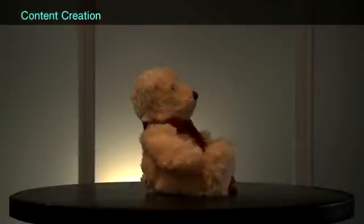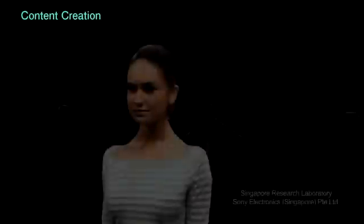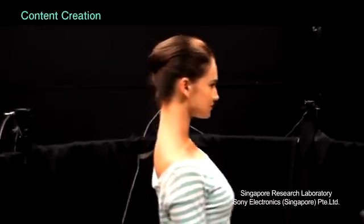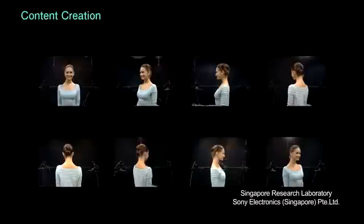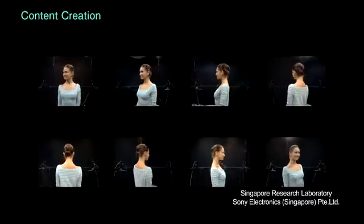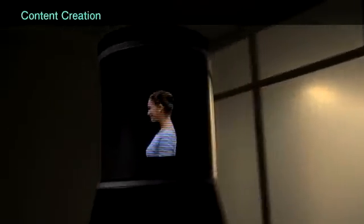A turntable is used to capture the photographed 360-degree static image. To capture 360-degree motion images, a new multiple-camera system has been developed. Eight cameras are circularly aligned, and the images are captured in 45-degree separations. With view interpolation image synthesis from all eight cameras, we generate continuous 360-degree viewpoint motion images.